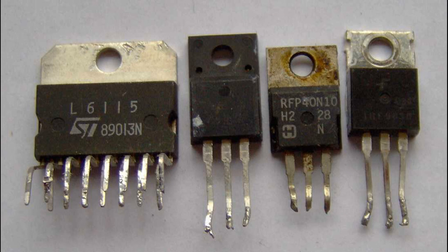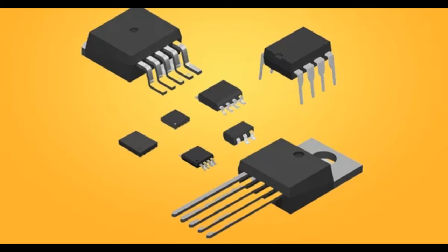While MOSFETs are not as commonly associated with demodulation, they can be part of circuits involved in signal processing and demodulation — the process of extracting the original information signal from the modulated carrier. MOSFETs in variable gain amplifier circuits can dynamically adjust the amplification of the modulating signal. Other components like diodes, operational amplifiers, and specialized modulation circuits are also crucial for proper modulation and demodulation processes.